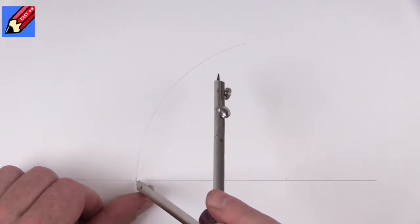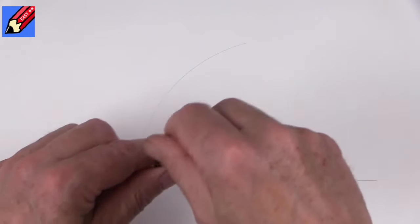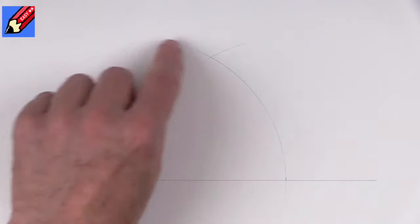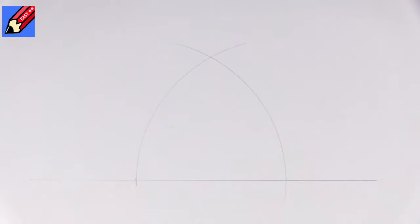Which means then that if we put the pin on this end and we draw an arc through there, any point on this arc is 10 centimeters away from that point.